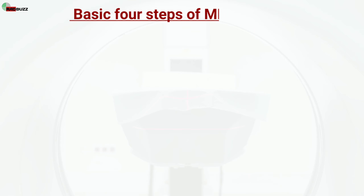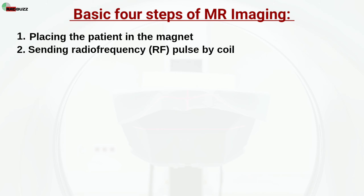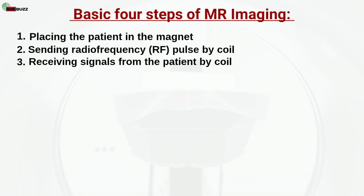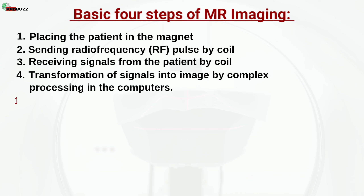Basic four steps of MR imaging. First, placing the patient in the magnet. Second, sending radio frequency by coil. Third, receiving signals from the patient by coil. Fourth, transformation of signals into image by complex processing in the computers.